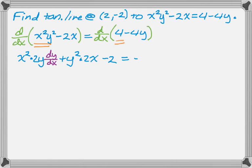Equals the derivative of 4 is just 0, so then we get the derivative of negative 4y is negative 4, and then a dy/dx.